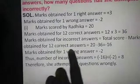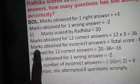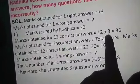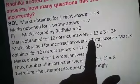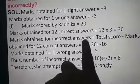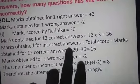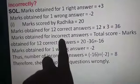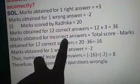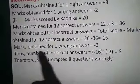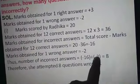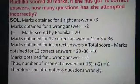Marks obtained for 1 right answer: plus 3. Marks for 1 wrong answer: minus 2. Total marks Radhika got: 20. First, find marks for 12 correct answers: 12 into 3 equals 36. Then marks for incorrect answers equals total minus marks in correct answers: 20 minus 36 equals minus 16. Marks in incorrect answers are negative because marks are being deducted. Marks obtained for 1 wrong answer is minus 2. Total number of incorrect answers equals minus 16 divided by minus 2, which is 8. Therefore she attempted 8 questions wrongly.